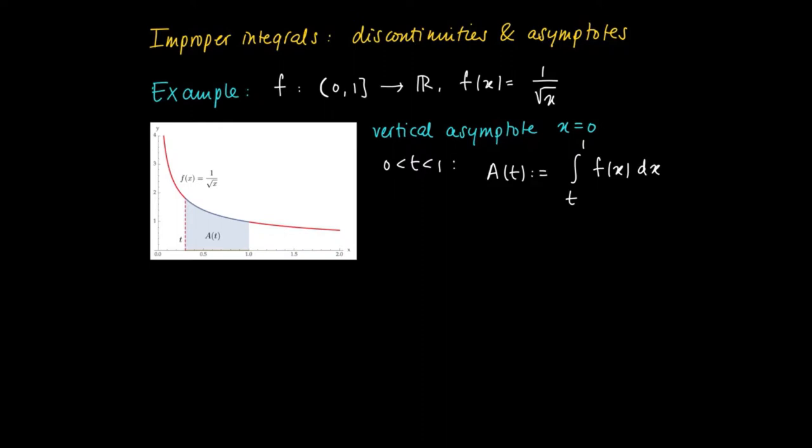We may calculate for each number t between 0 and 1 the integral of f(x) from t to 1, since the primitive is given by 2 times the square root of x. We may evaluate the primitive at the endpoints 1 and t. So we get as a result 2 minus 2 square root of t.